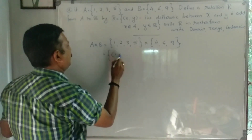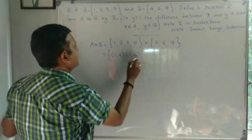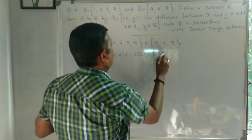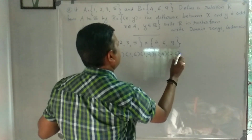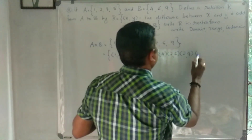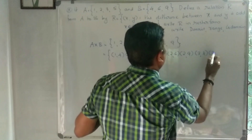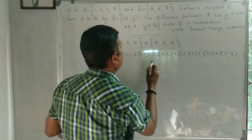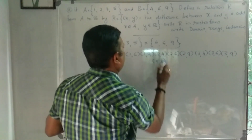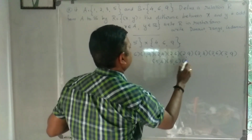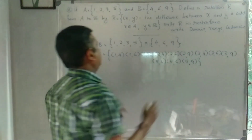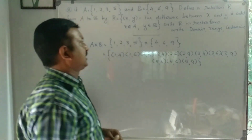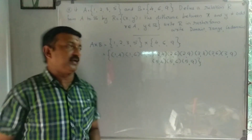The ordered pairs in A × B are: (1,4), (1,6), (1,9), (2,4), (2,6), (2,9), (3,4), (3,6), (3,9), (5,4), (5,6), (5,9).